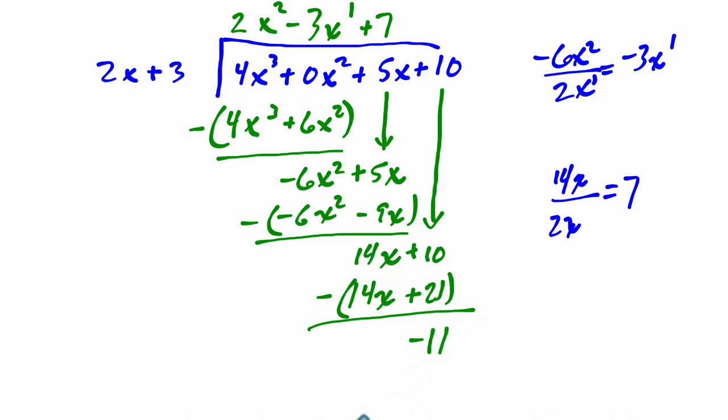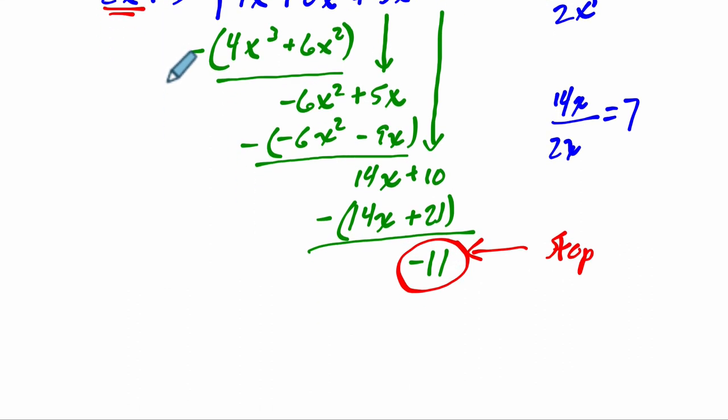And that's our remainder. We stop here because this constant has a lower degree than the leading term here. So we stop when that happens. When you either reach a constant or you reach, let's say, if this was x to the third and we had negative 11x², that 2 is less than the 3, so we'd stop. But here we have a constant term, so we stop.